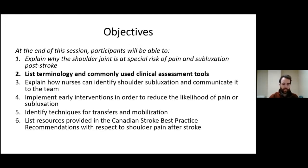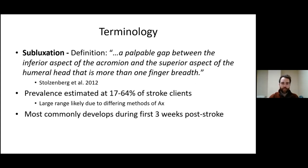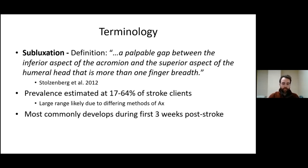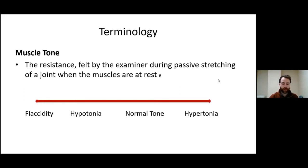Next objective: terminology and commonly used clinical assessment tools. A common definition of subluxation is a palpable gap between the inferior aspect of the acromion and the superior aspect of the humeral head greater than one finger breadth or one centimeter. The prevalence of shoulder subluxation after stroke is estimated at 17 to 64 percent of all stroke clients, though the literature suggests it's normally at the higher end — around 60 percent. Subluxation most commonly develops three weeks post-stroke, when patients have the lowest level of motor control or tone in their arms to support the joint.